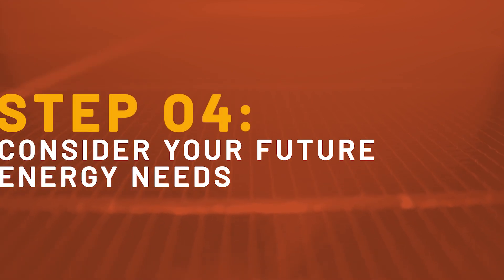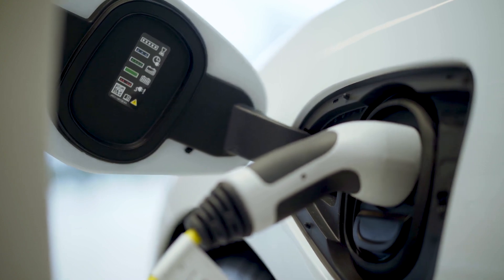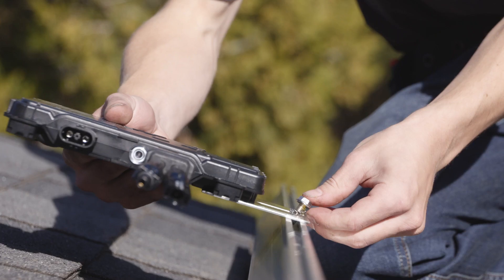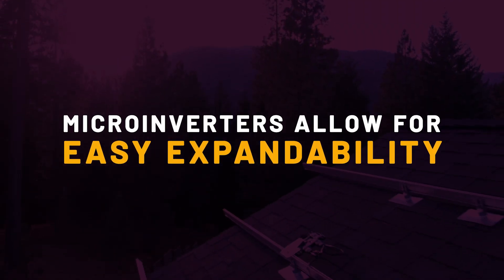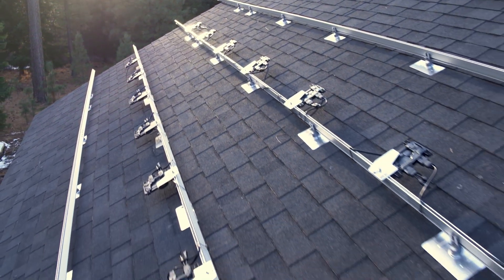Step four: think about expandability. Let's say you get a solar system that's sized perfectly for your current needs — but what happens when you have kids, build a new workshop or home addition, or buy an electric car that needs charging? All of these events can change the way and the amount of energy you use on a monthly and yearly basis. So having room to expand and meet changing power needs is crucial. A good solar designer can help design a system that's expandable and point out extra considerations or constraints. Designing your system using microinverters is a great way to ensure expandability, since each panel has its own dedicated microinverter — provided you have the space, you can expand easily by buying more panels and microinverters to match.